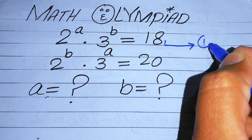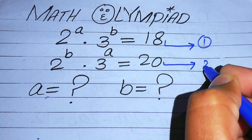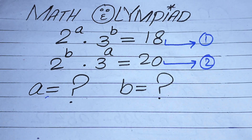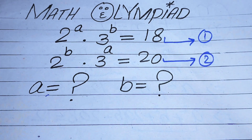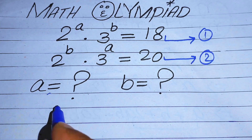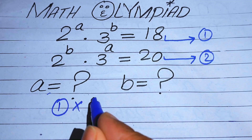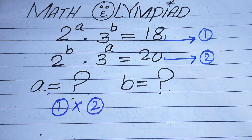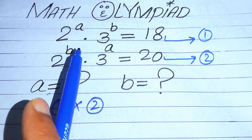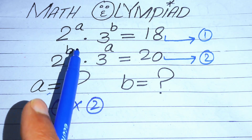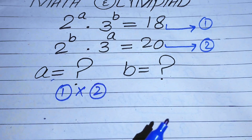We call the first expression equation number 1 and the second expression equation number 2. In order to find the values of a and b, we first multiply equation number 1 and equation number 2 together.